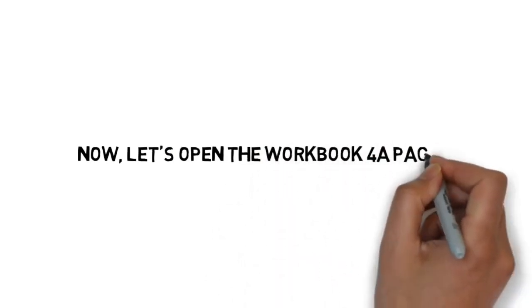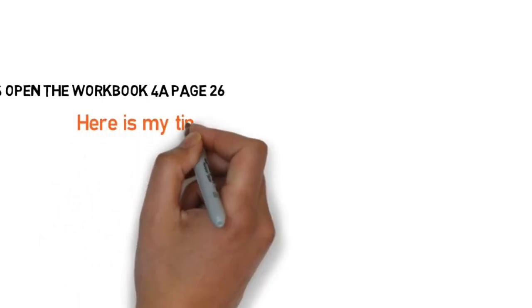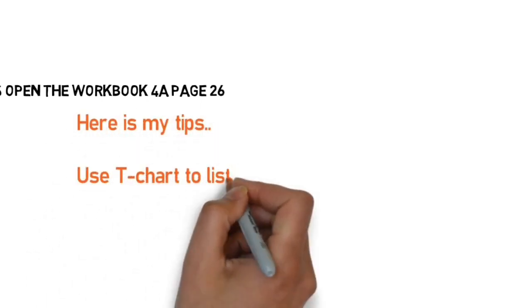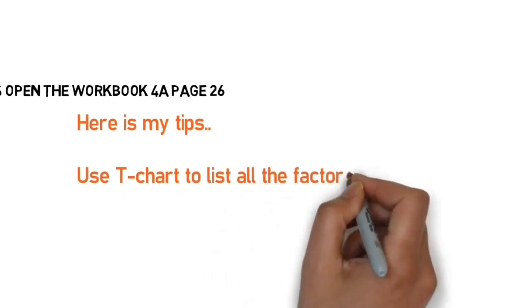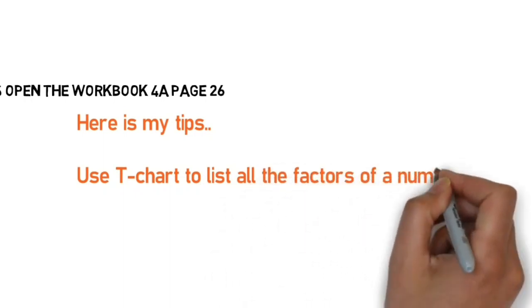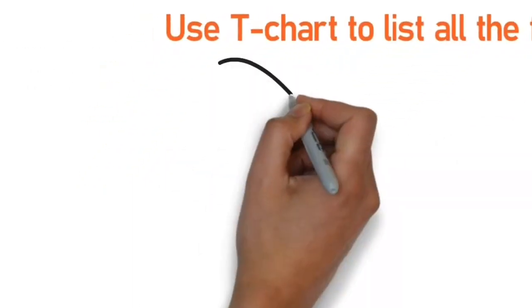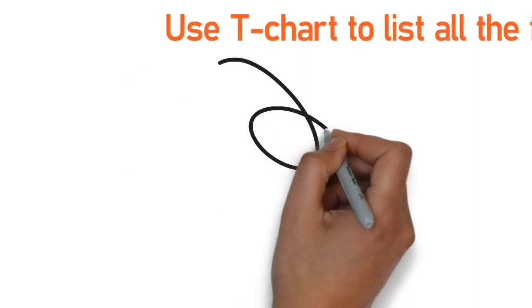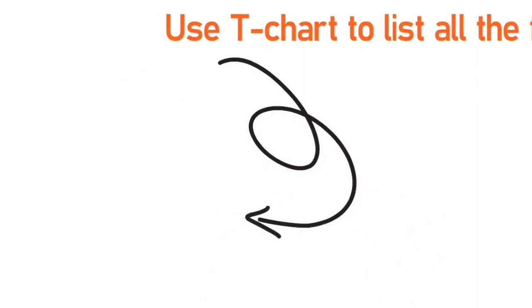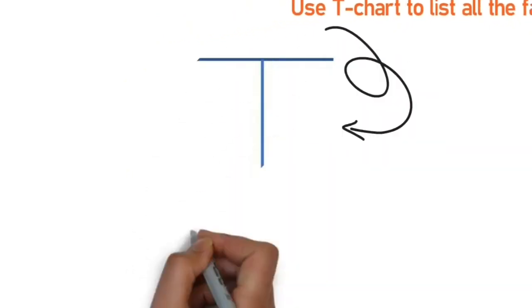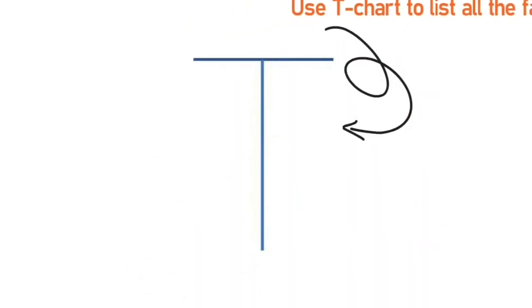And the workbook, page 26. Ready, guys? Now, here is my tip: use a T-chart to list all the factors of a number. What is a T-chart, sir? This is what a T-chart looks like — it looks like a letter T. How to use it? Let's check it out.